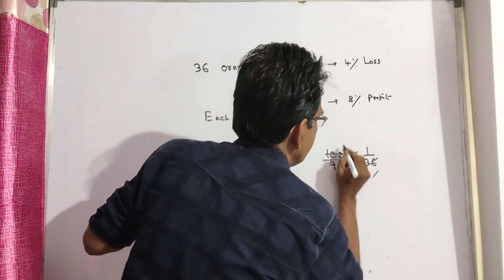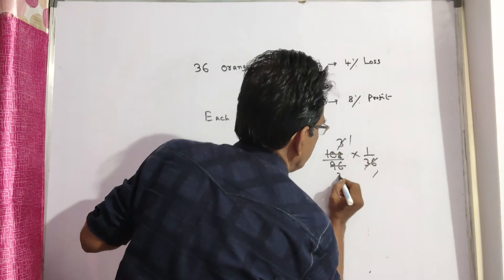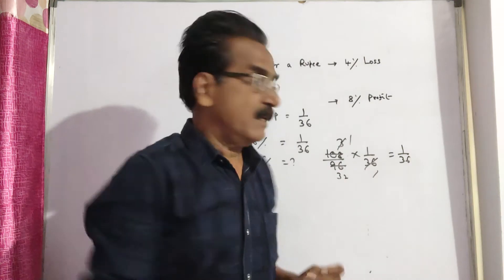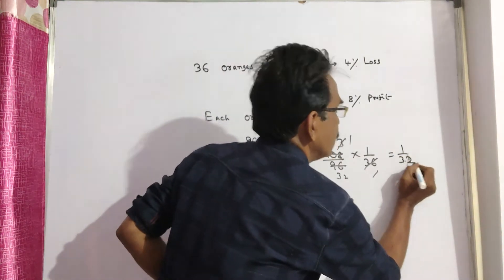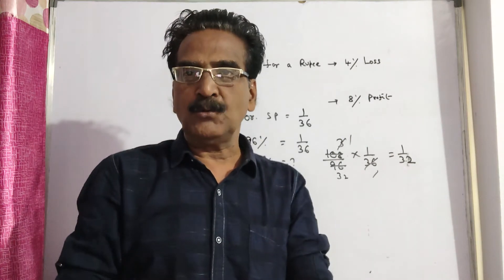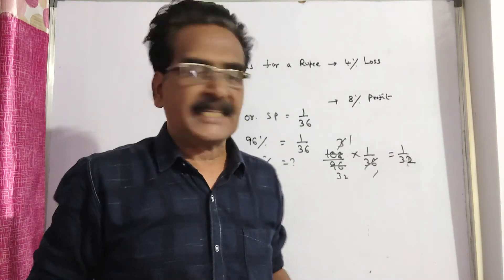36, 3s, 3 ones, 3 32s, 1 by 32. So we have to sell each orange at 1 by 32 to get a profit of 8%.